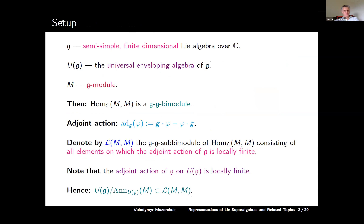Let me start with the setup. During the talk, G is a semi-simple finite-dimensional complex Lie algebra, and U(G) is the universal enveloping algebra of G. If you take a G-module M, then we can consider the set of all linear endomorphisms of M over complex numbers. This is naturally a G-G bimodule, and we can consider it as a G-module with respect to the adjoint action of G.